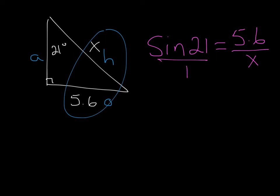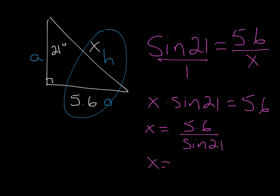So I put this over 1, and I simply cross-multiply. So x times the sine of 21 equals 5.6. And remember, sine of 21 is simply a number, so I can divide both sides. So x is going to be 5.6 divided by sine of 21. And when I plug that in on my calculator, I get x equals 15.6 roughly. So this side over here is 15.6.